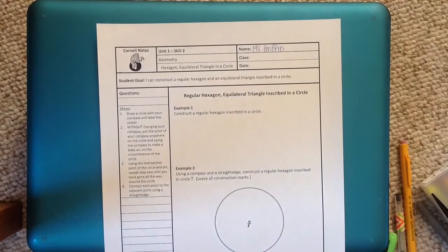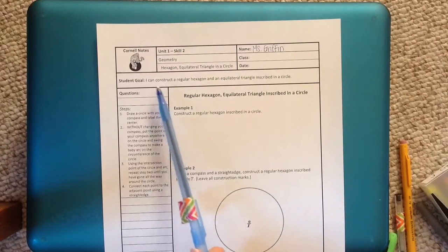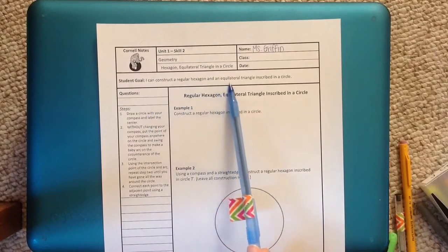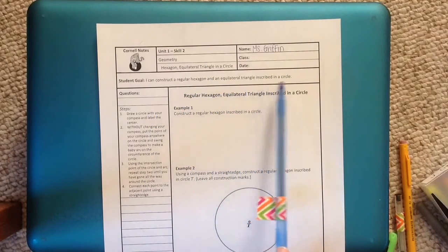We're going to be looking at hexagons and equilateral triangles inscribed in a circle. So our goal for the end of class today, or by the end of this video, is to be able to construct a regular hexagon and an equilateral triangle inscribed in a circle.